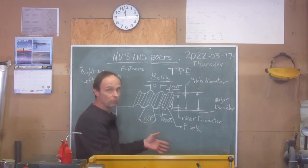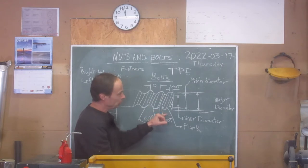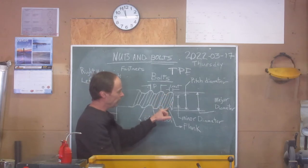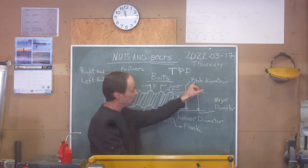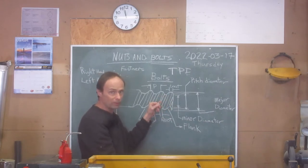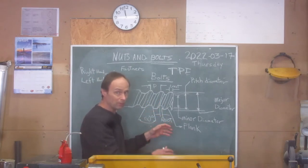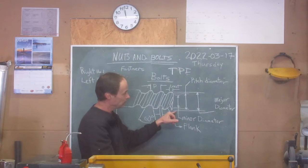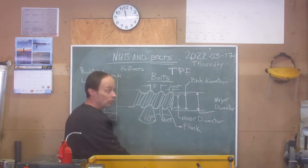From root to root is the minor diameter. From the center of the flank — where most of the work is done — is the pitch diameter. You also see pitch diameter on gears and racks; it's the middle of the face where most of the action and strain happens. Major diameter is from crest to crest.